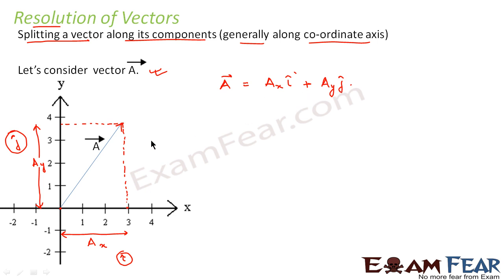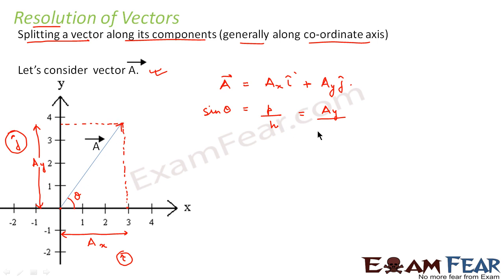From this diagram, let us suppose this angle is theta. From basic trigonometry, sin θ equals perpendicular divided by hypotenuse. The perpendicular here is ay, and the hypotenuse is the vector a. Similarly, cos θ equals base divided by hypotenuse — the base is ax, so this is ax divided by a.